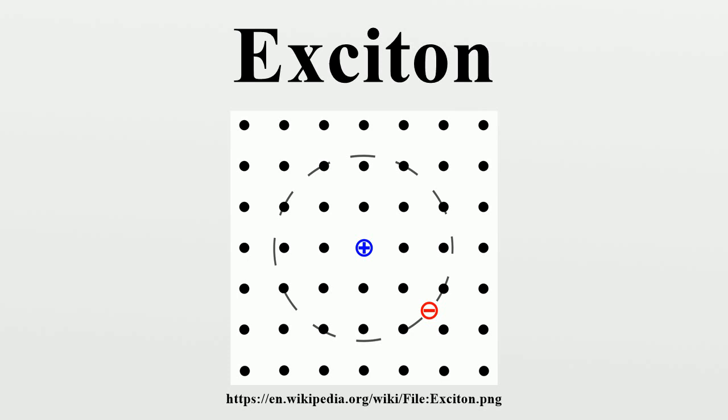Frenkel excitons: In materials with a small dielectric constant, the Coulomb interaction between an electron and a hole may be strong and the excitons thus tend to be small, of the same order as the size of the unit cell.